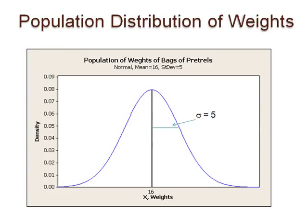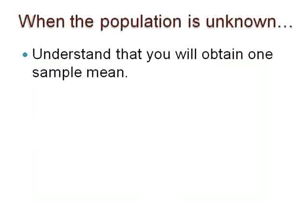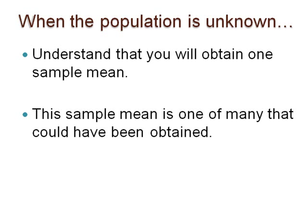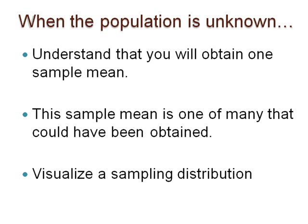Though it is unrealistic to set specific values for the population mean and standard deviation when they are unknown, at the end of the story, once you understand this idea, you will work with the one sample mean you take. You will know the sample mean is one of many that could have been obtained, and all those sample means can be visualized on a sampling distribution.